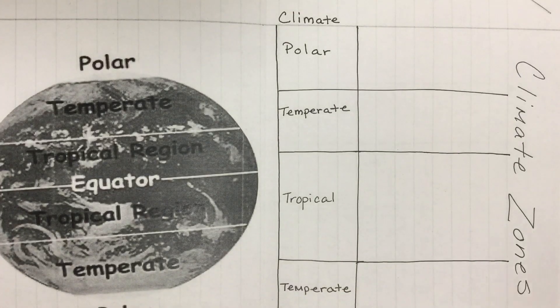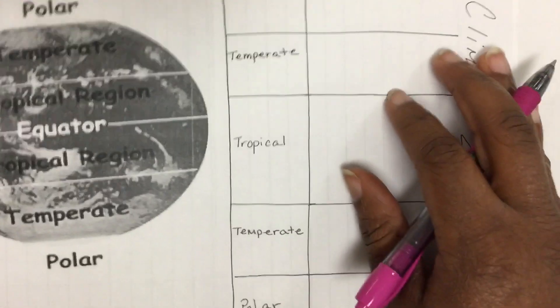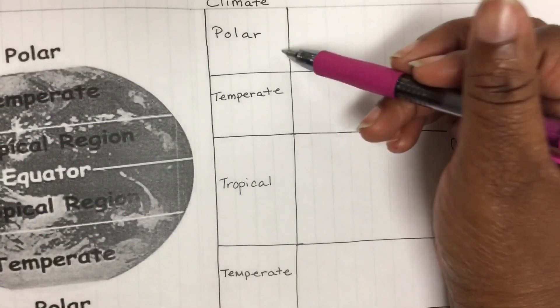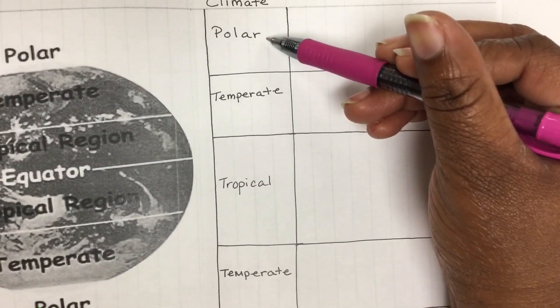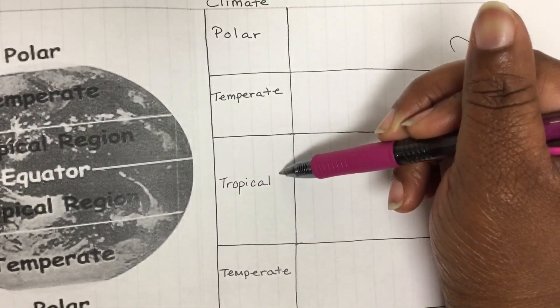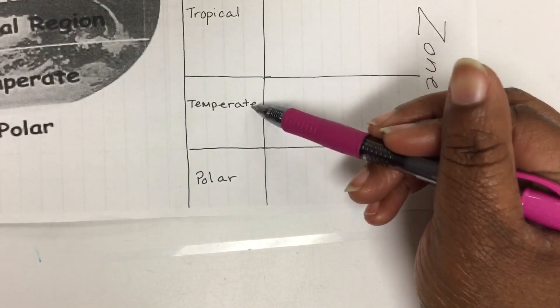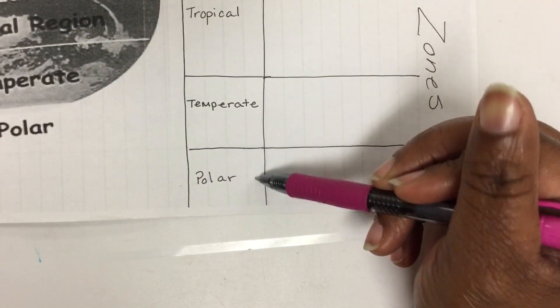This video is over the climate zones. Notice that there are three different climate zones: polar, temperate, and tropical, and then they repeat again on the bottom with temperate and polar.